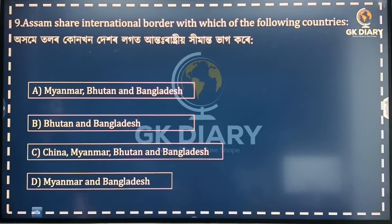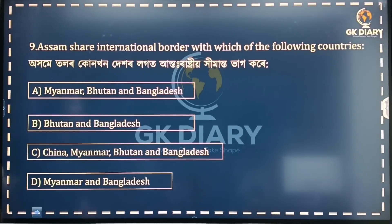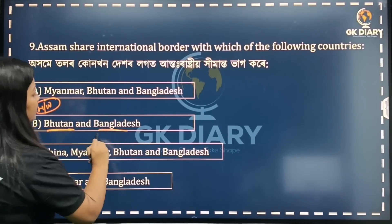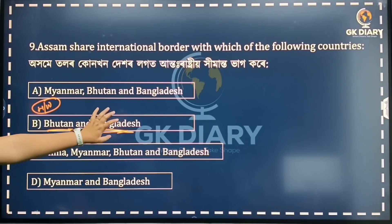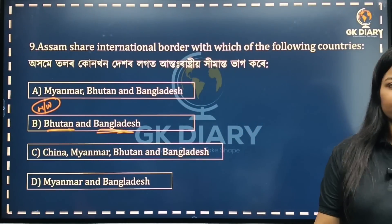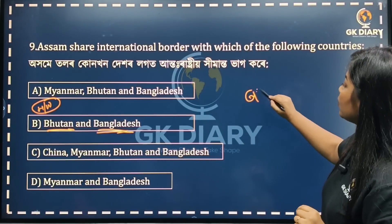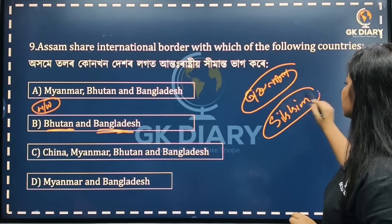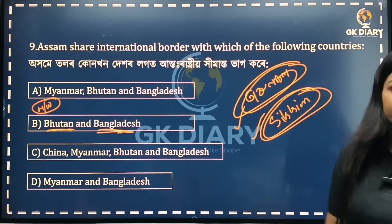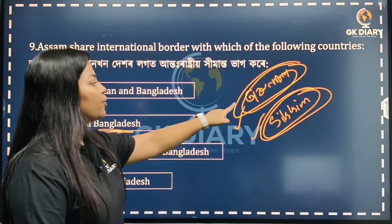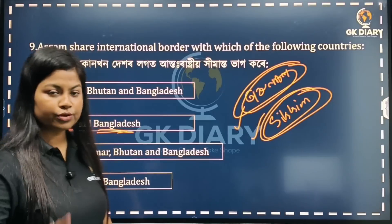Next question: Assam shares international borders with which of the following countries? The first thing to note is Bangladesh. If you want to know the longest shared boundary, Assam shares the longest international boundary with Bangladesh. This has already been discussed in the live session.